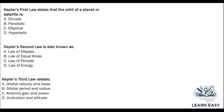Next question: Kepler's first law states that the orbit of a planet or a satellite is — option A: circular; option B: parabolic; option C: elliptical; option D: hyperbolic. The answer is option C — the orbit of a planet or a satellite is elliptical.